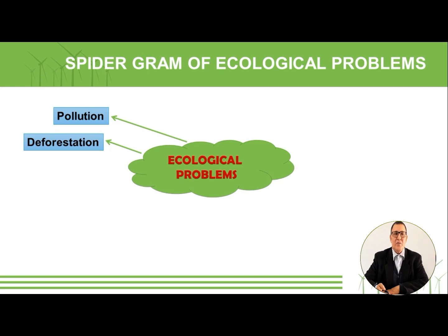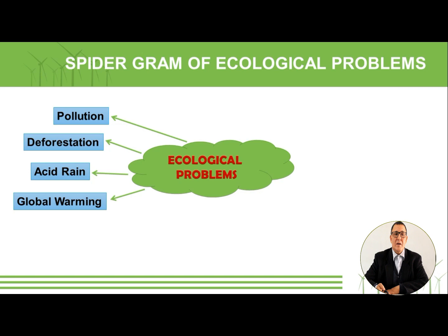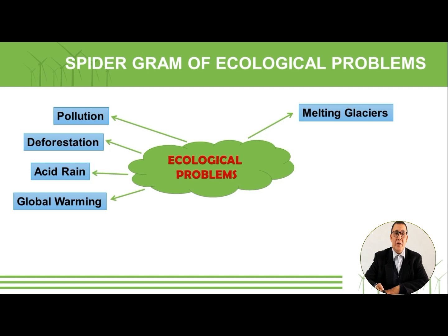Related to deforestation is acid rain. Acid rain is caused by air pollution — toxic chemicals are emitted into the air, and when rain falls they cause damage. Next is global warming. When the temperature goes up, glaciers melt, especially at the north and south poles. The level of water rises, and some cities might disappear in the future.